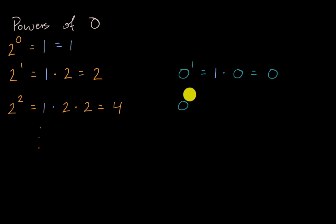What do you think zero to the second power is going to be equal to? Pause this video and think about that. Well, it's going to be one times zero twice. So times zero times zero, and I think you see where this is going. This is also going to be equal to zero.